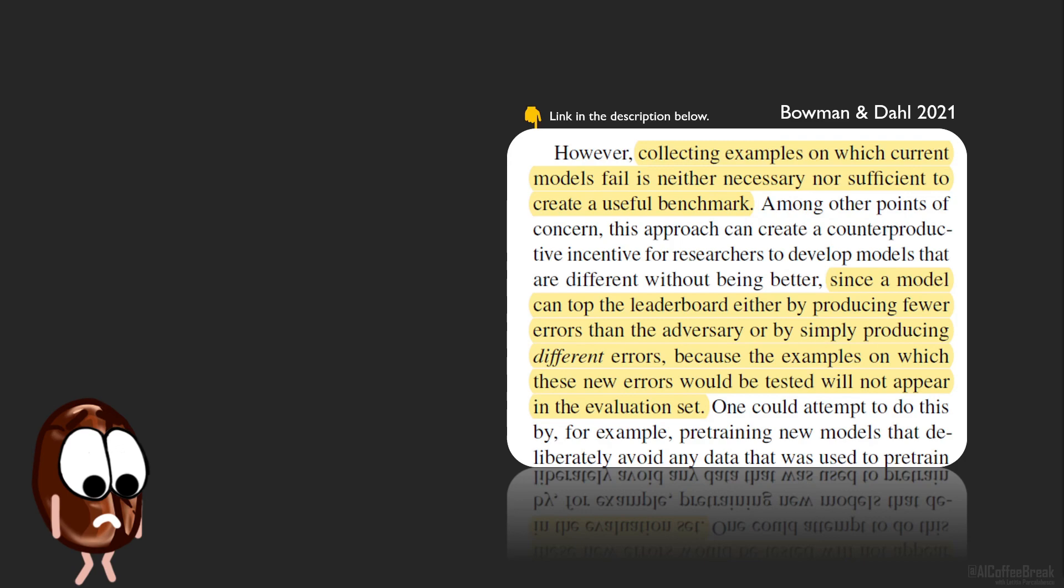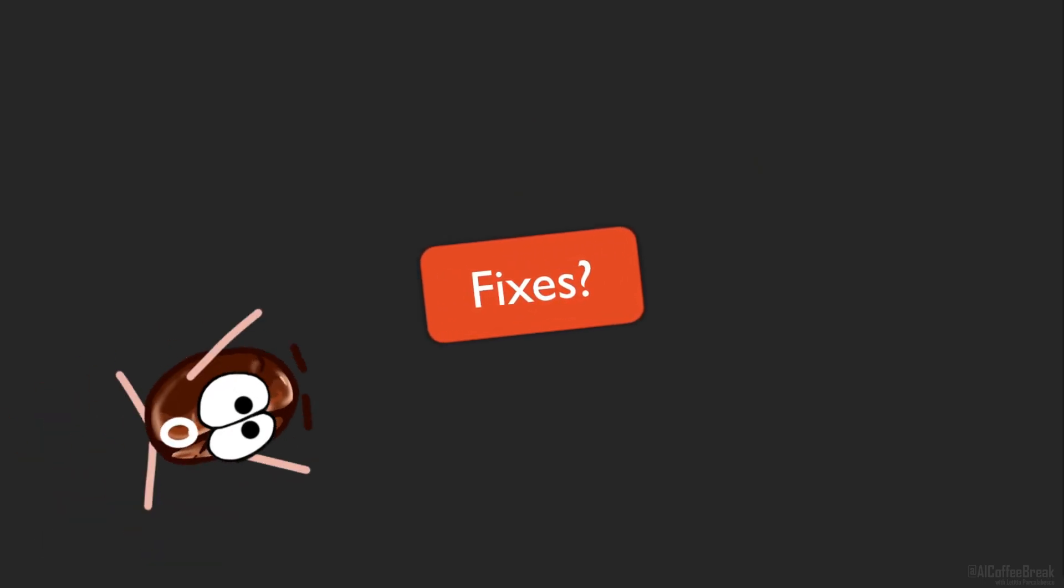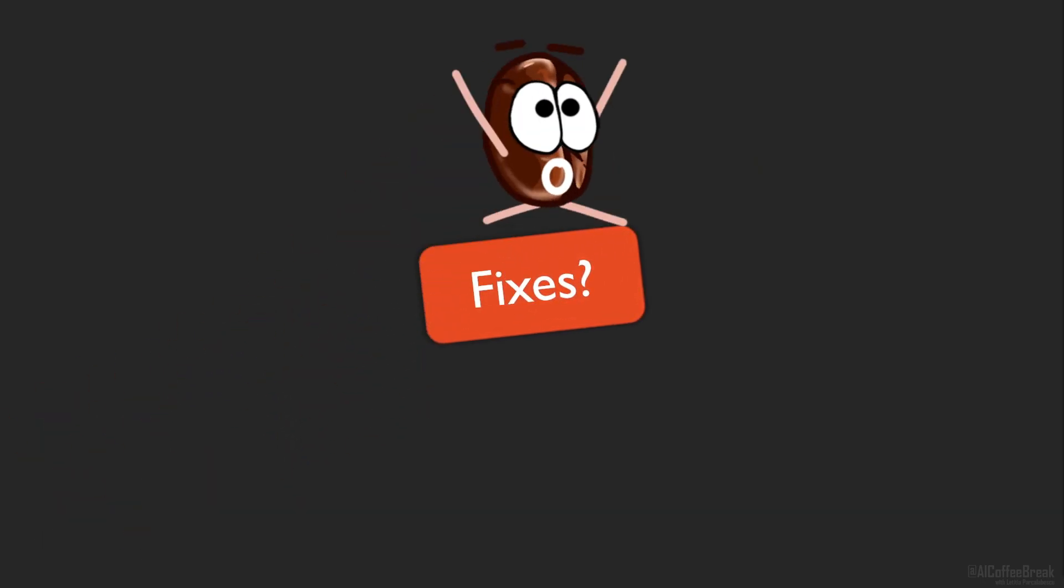But they also argue that this again doesn't help to produce a better way of benchmarking NLU, because these examples can be circumvented by producing models that drop one set of bad reasons it used to solve the task without understanding it, and just choose another set of bad reasons that are not targeted by the adversarial benchmark. So the point here is that usual benchmarks are broken because of biases, that adversarial benchmarks do not solve the problem either, so the authors propose four new criteria that benchmarks should satisfy.